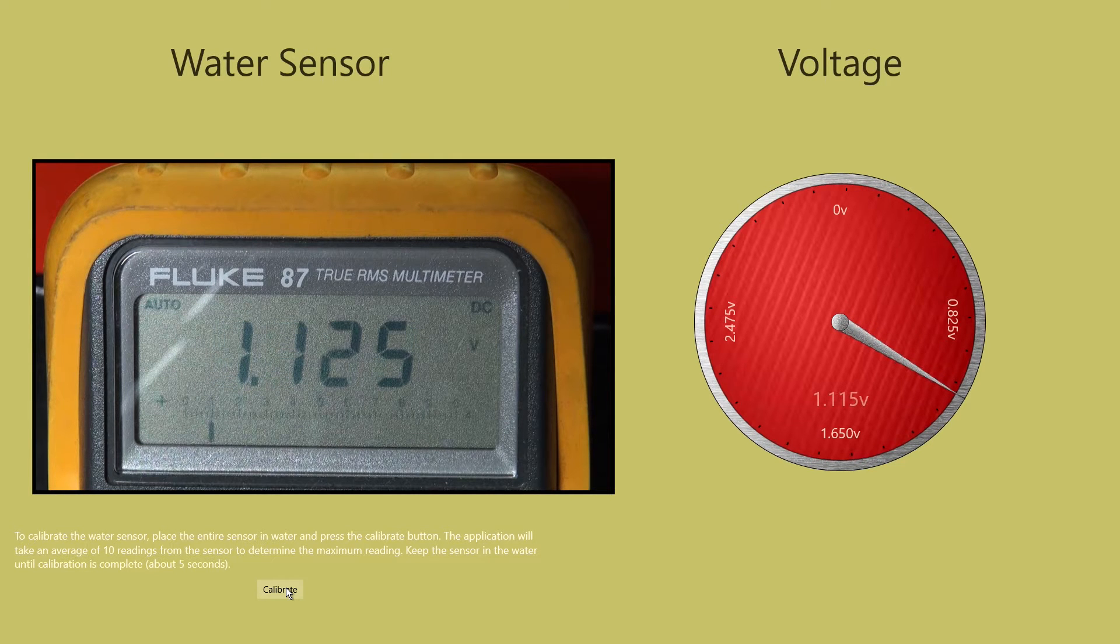Let's hold here at about 1.1 volts. As you can see, the meter in the application is displaying relatively the same reading that we have on the multimeter.